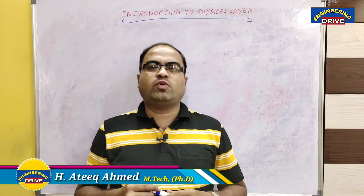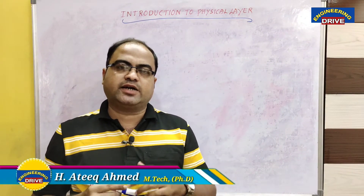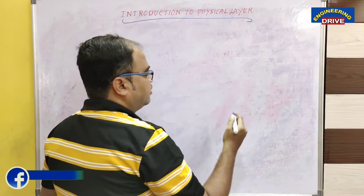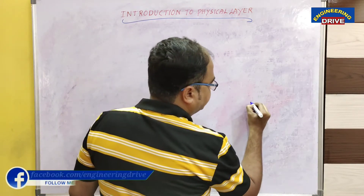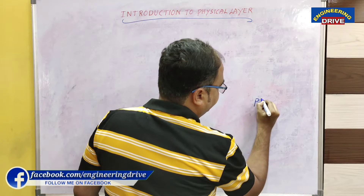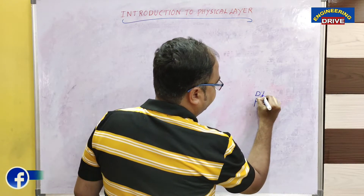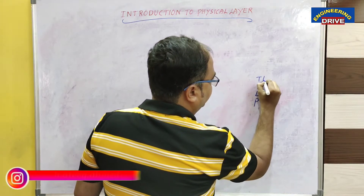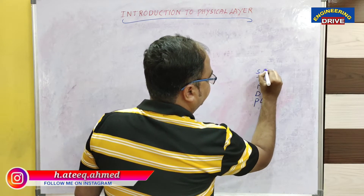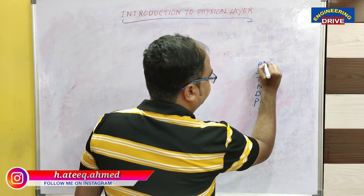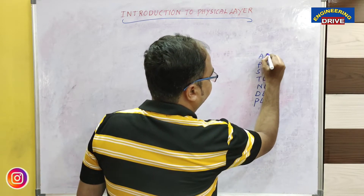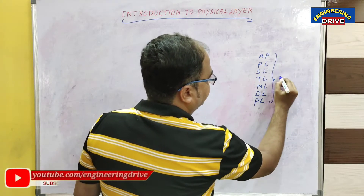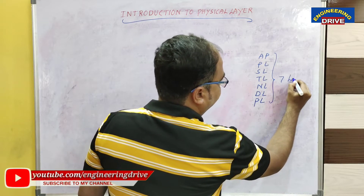Let us now discuss what is actually a physical layer. In OSI reference model, we have seven layers: starting from physical layer, data link layer, network layer, transport layer, session layer, presentation layer, and application layer. So these are the seven layers in our OSI reference model.